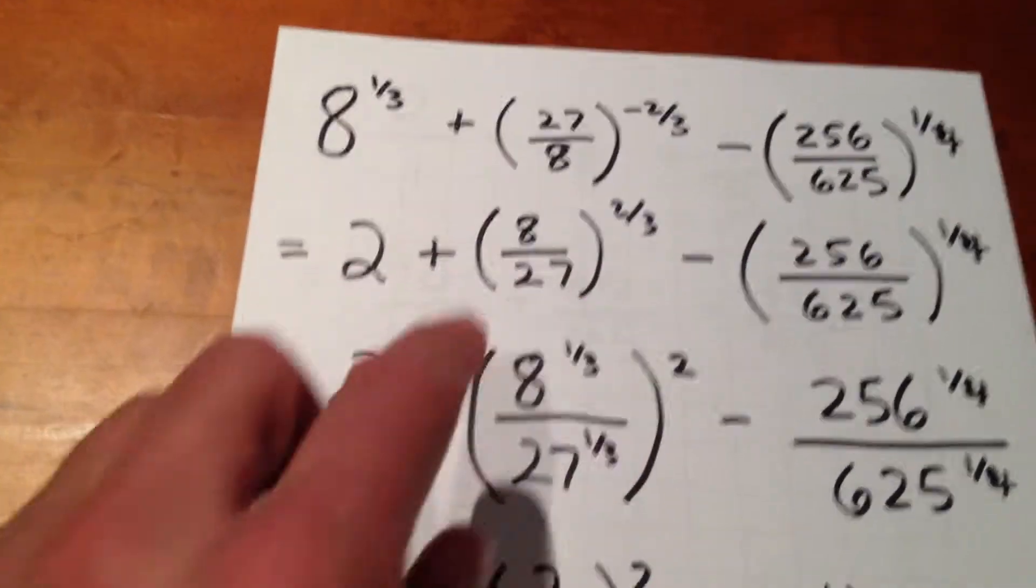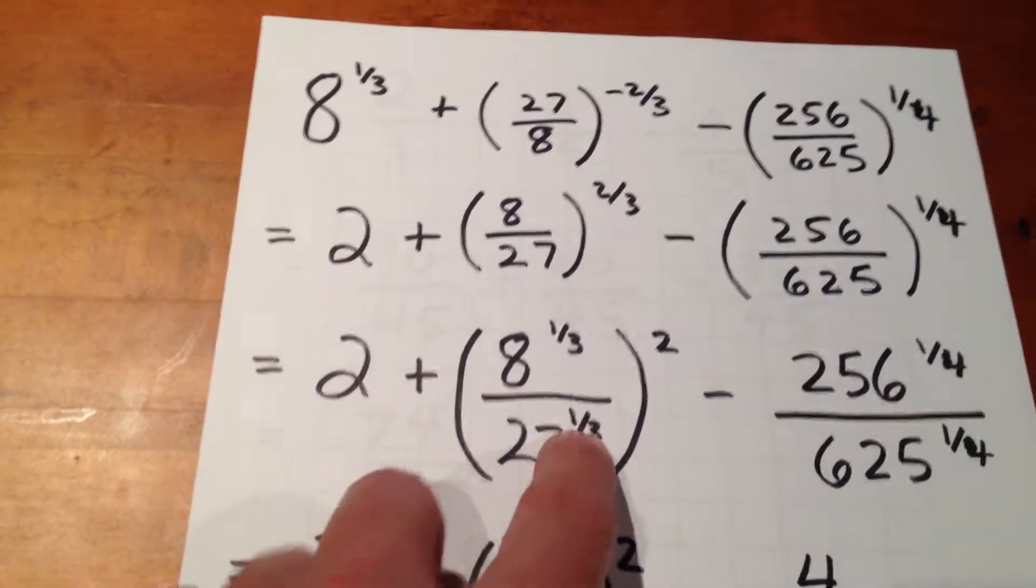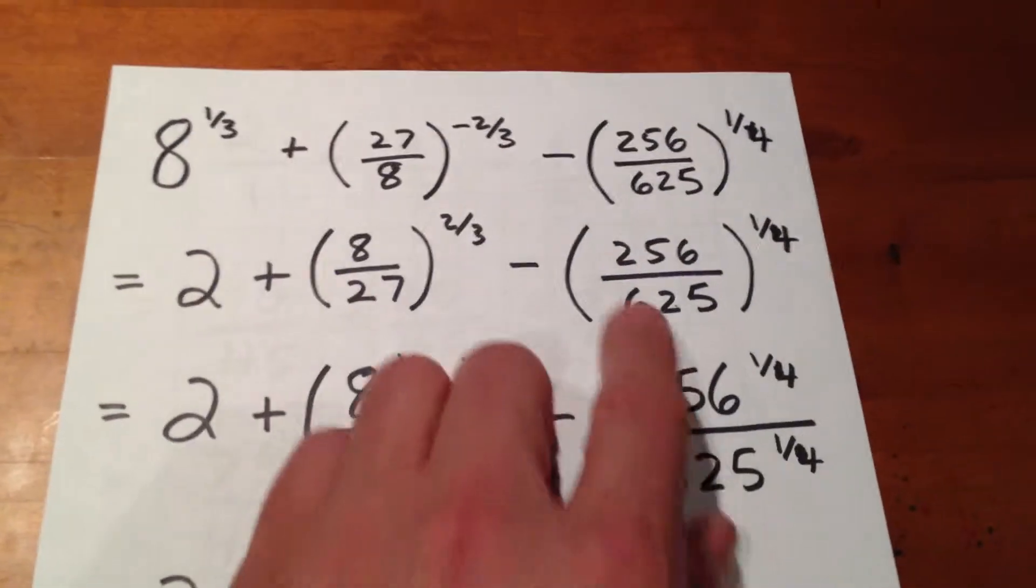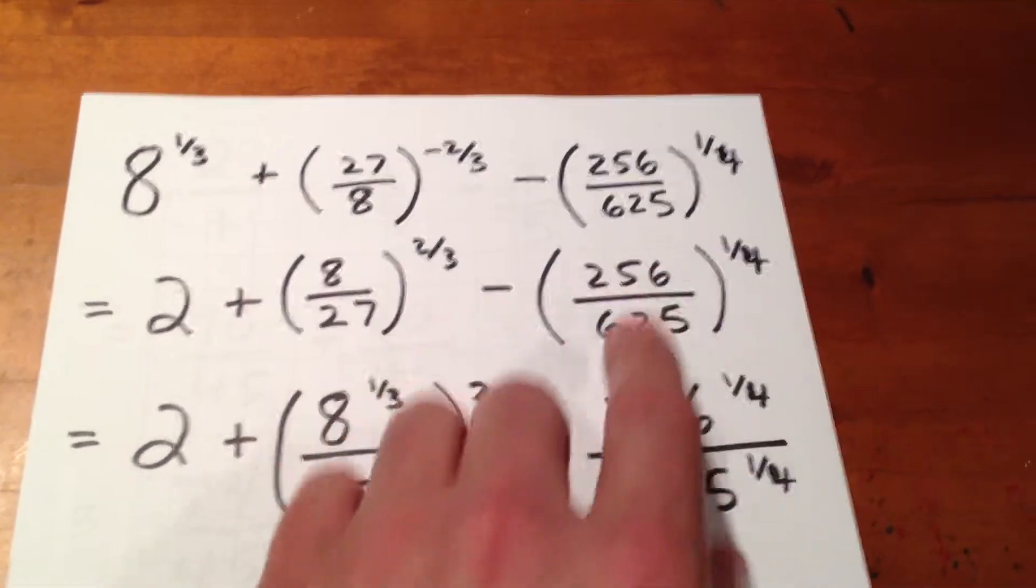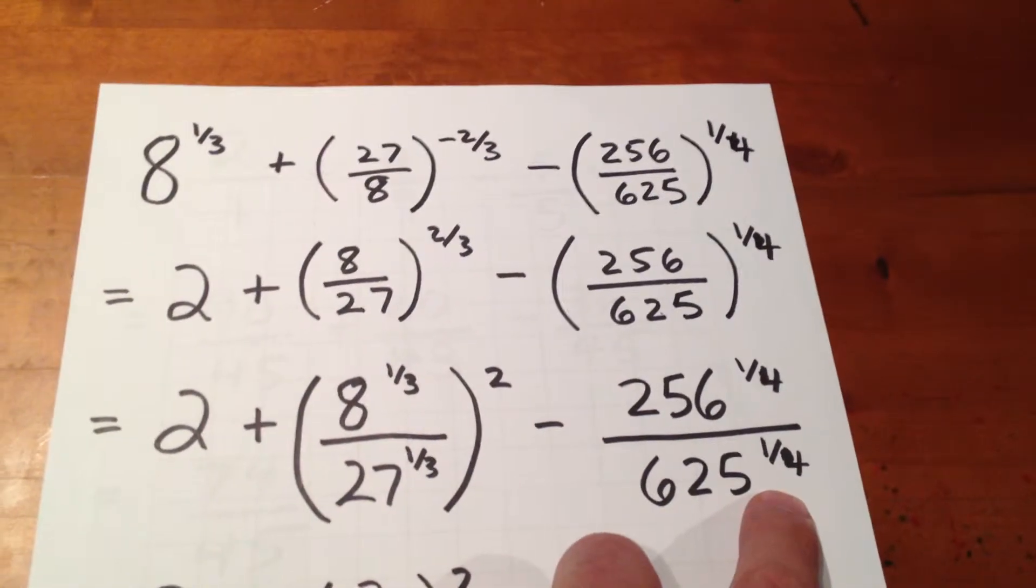8 over 27 to the two-thirds is like saying 8 to the one-third and 27 to the one-third, but then remembering to square the result. And 256 over 625 to the one-quarter is like figuring the fourth root of the numerator and the fourth root of the denominator.